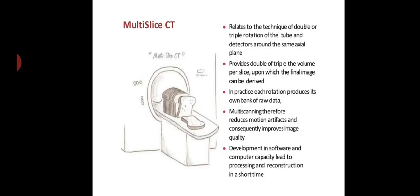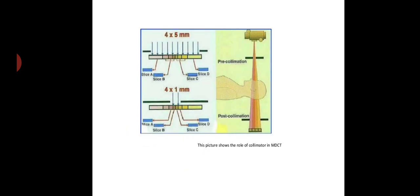Now let us talk about the multi-slice CT. It relates to the technique of double or triple rotation of the tube and detectors around the same axial plane. This provides double or triple the volume per slice upon which the final image can be derived. In practice, each rotation produces its own bank of raw data. Multi-scanning therefore reduces motion artifacts and consequently improves image quality. Development in software and computer capacity led to processing and reconstruction in a short time.